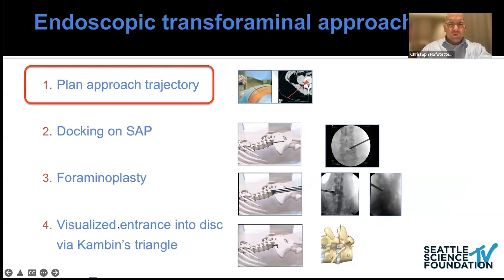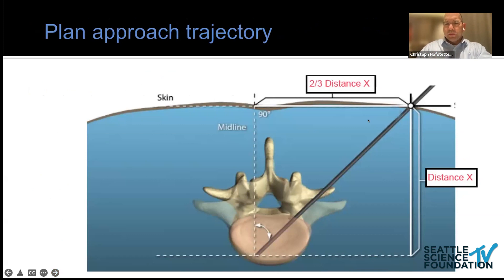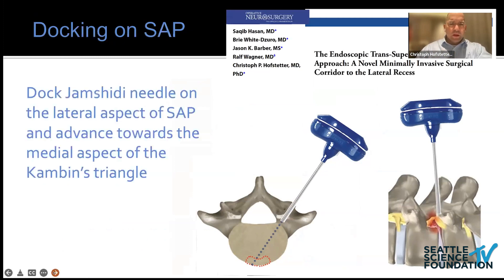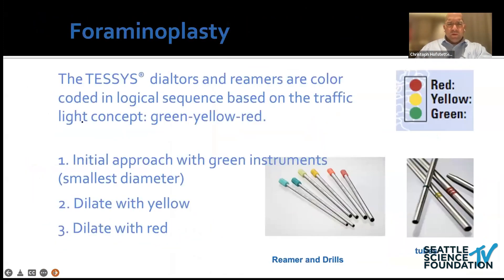Quickly, the steps — whittled down to four now. The most important thing is planning the trajectory. Classically, full endoscopic T-LIFs were done at 45 degrees, but we've changed it — typically two-thirds of the distance, very similar to a T-LIF approach trajectory. I like to have the tip of the cage slightly off to the contralateral side of the midline, resting on the epiphyseal plate as the hardest bone structure. For docking on the SAP, we published a paper two years ago showing that at our institution we no longer do blind targeting of the foramen — we dock on the SAP, which avoids a lot of postoperative nerve root irritation and allows visualized entry into Kambin's triangle.